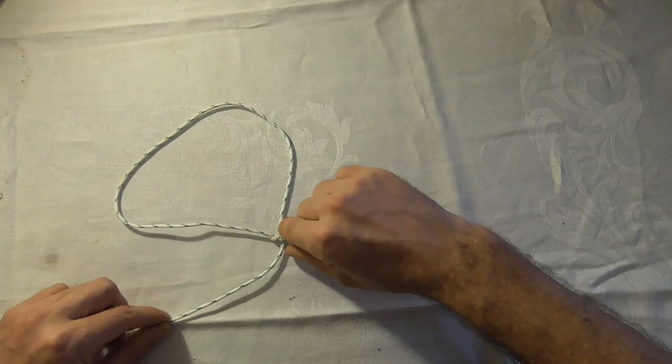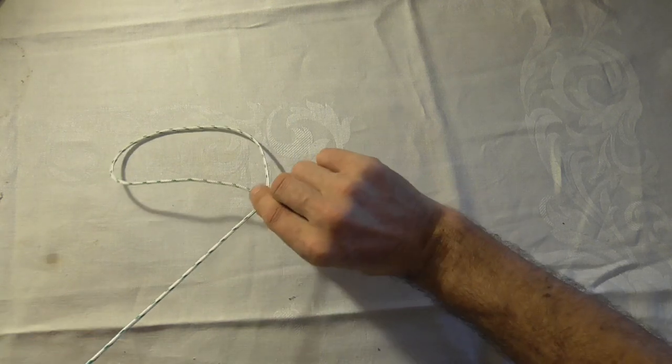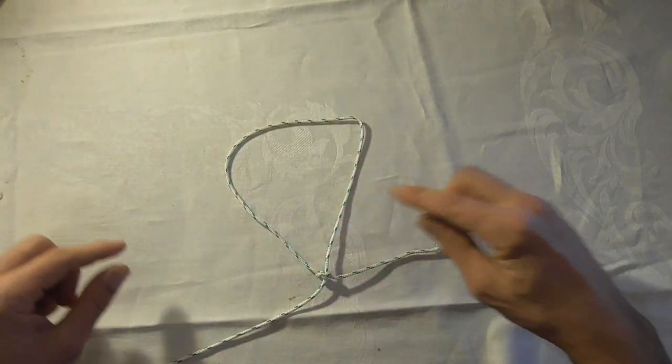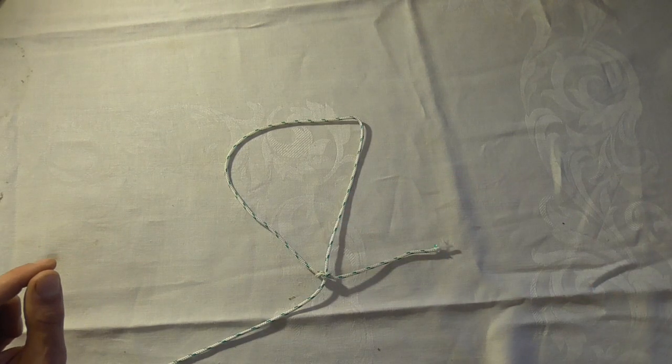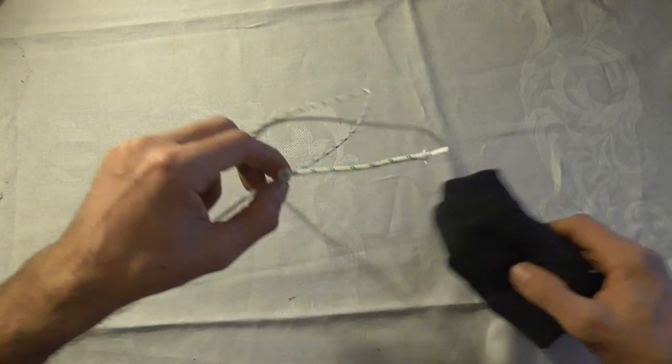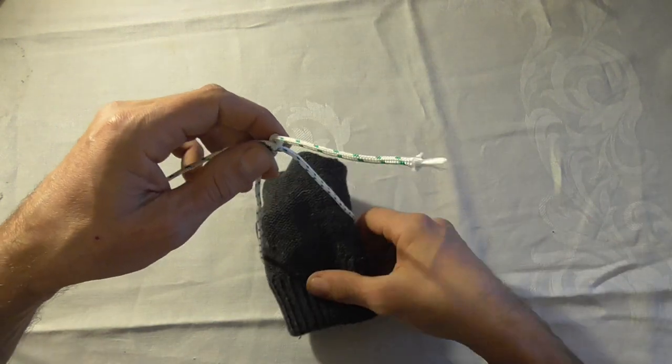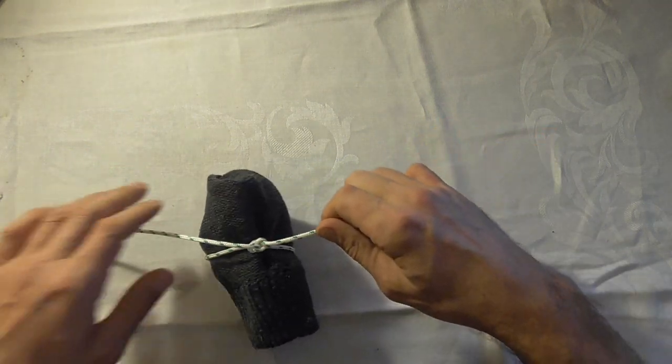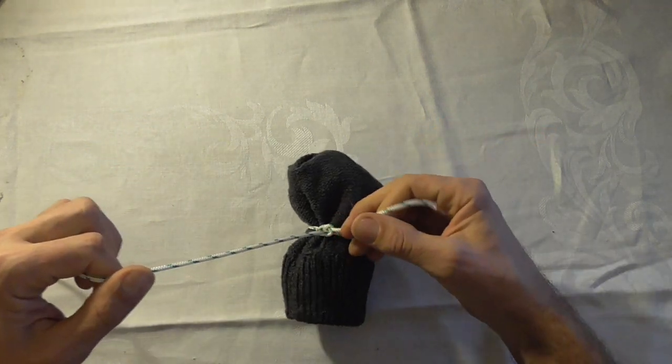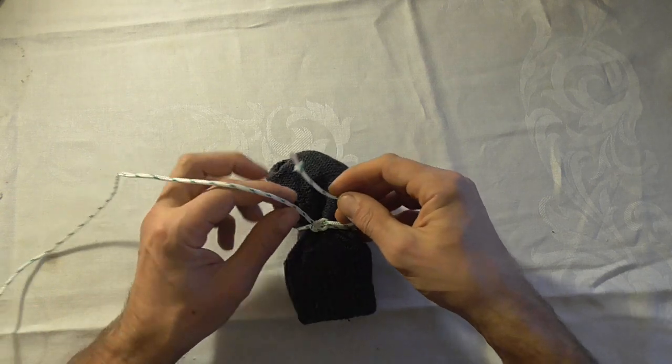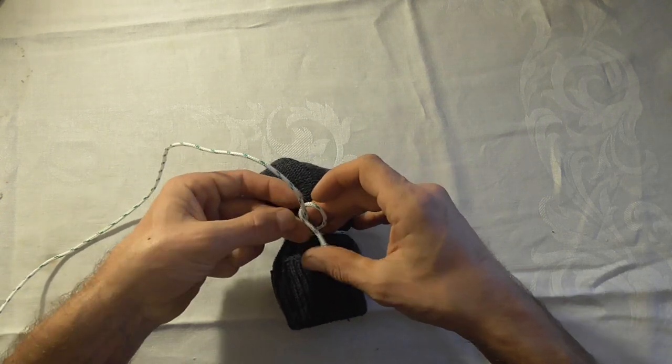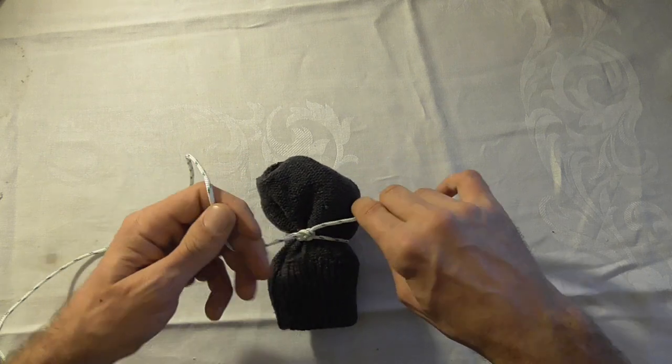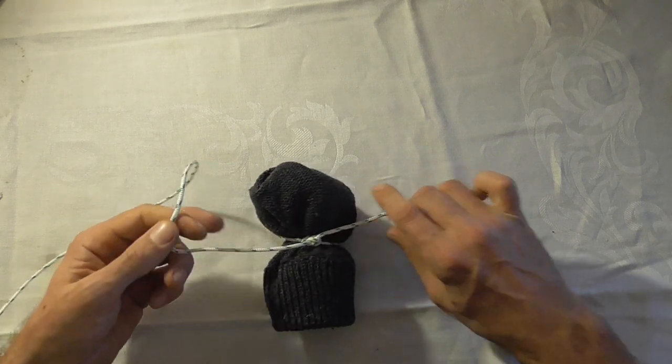Now if we tug on the standing part, you'll see that we have an adjustable loop. If we wanted to tighten up a blanket, we could put it in like so and then tighten down. To finish it off, we just tie a half hitch. Then you can really tighten it down.